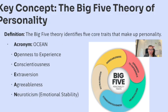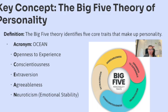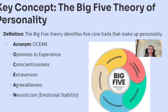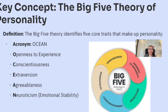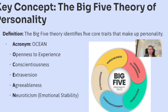The fifth trait is neuroticism, which relates to emotional stability. This trait measures emotional stability and how often a person experiences negative emotions. For example, someone high in neuroticism might frequently feel anxious or stressed, while someone low in neuroticism might tend to be calm and emotionally resilient under pressure. The Big Five traits are measured on a continuum, and no single combination is inherently good or bad. Understanding these traits can help us better understand ourselves and others.